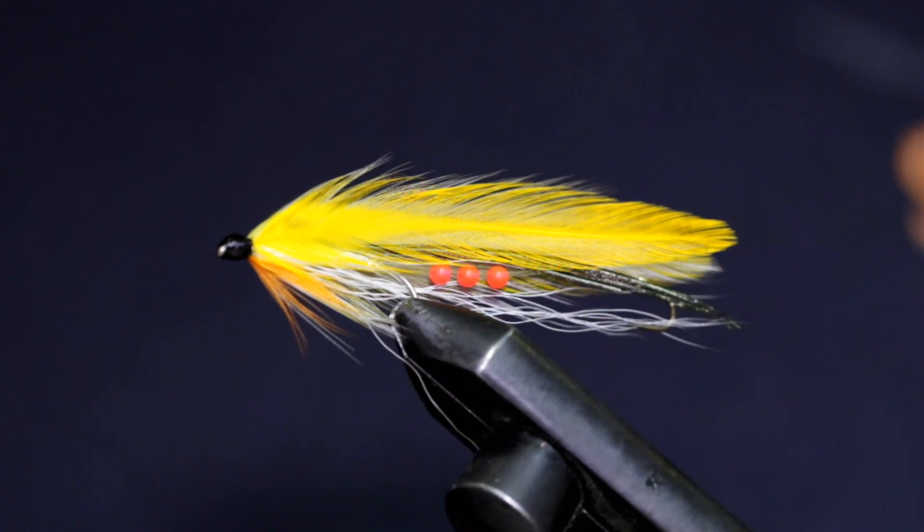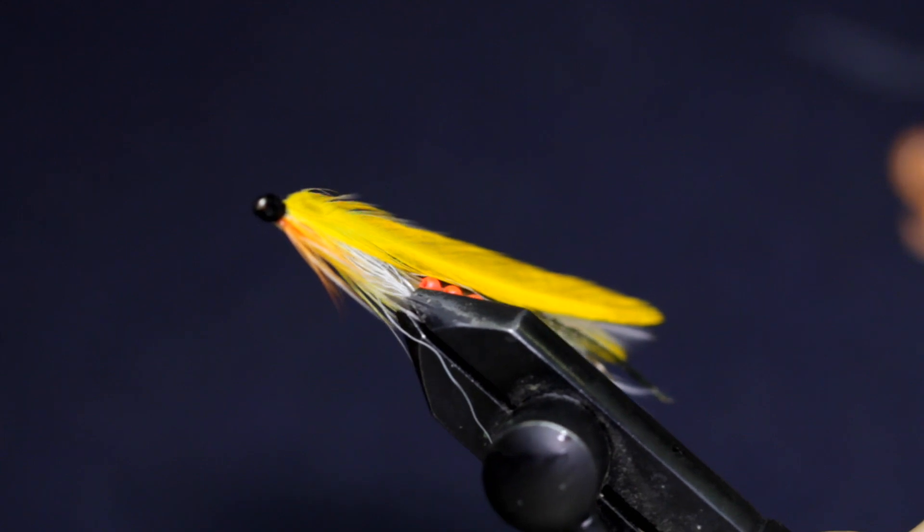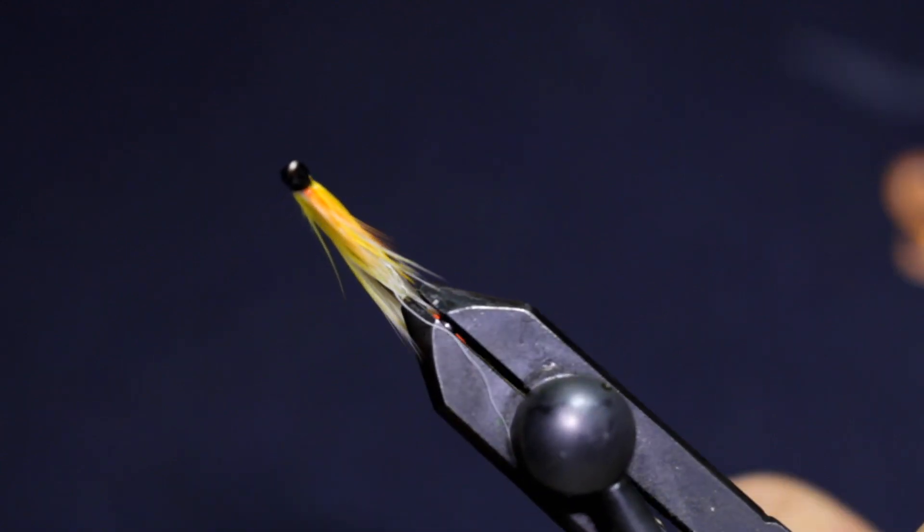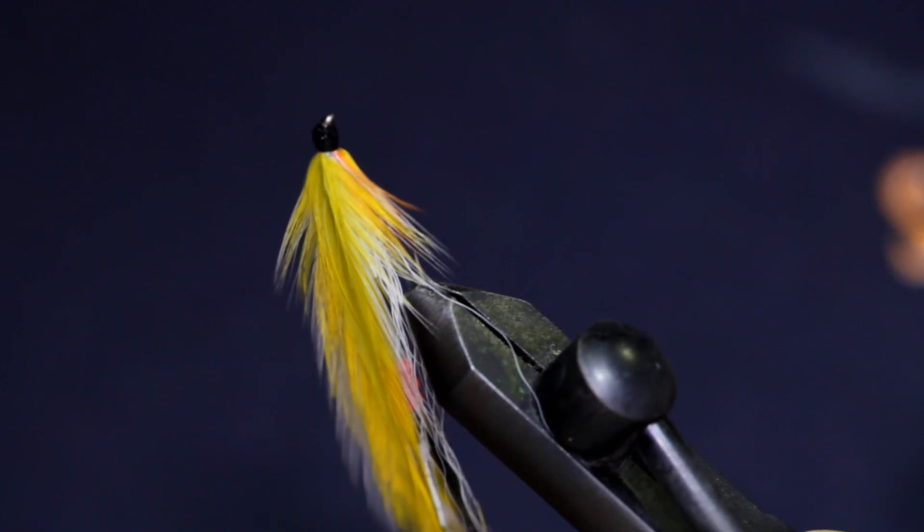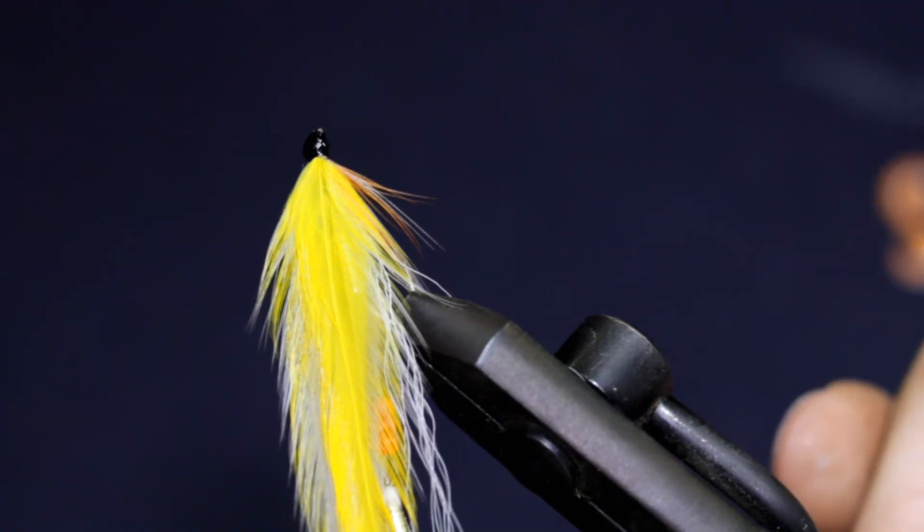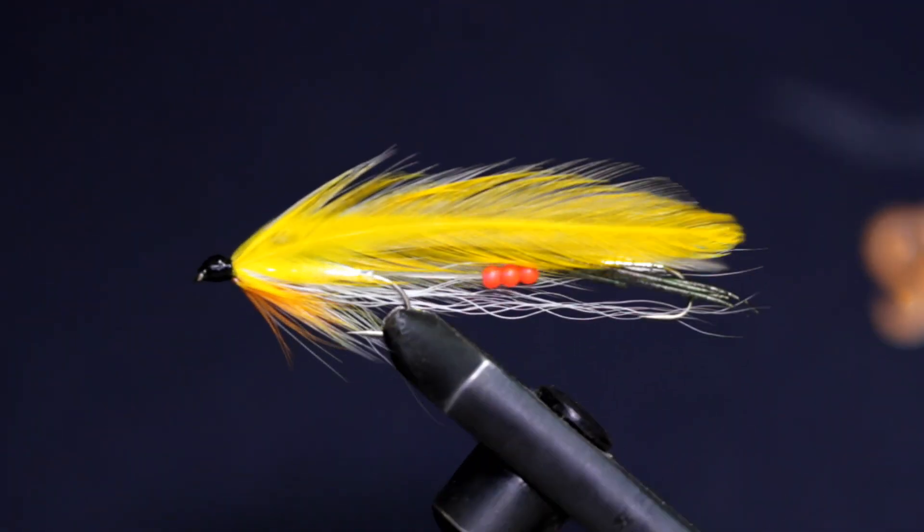Welcome back. Today I'm going to be tying up the Cathode Special. I've had this fly in my fly box for a couple of years now. I've caught rainbows, brook trout, brown trout, bass, pike. It's a really great attractor pattern with its bright colors and the profile of the feather wing streamer.